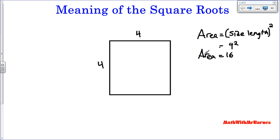Well, what if we had an area and we wanted to find the side length? If we had an area and we wanted to find the side length, we would have to do the opposite of a square. So that's where square root comes in. Square root is the opposite of a square.